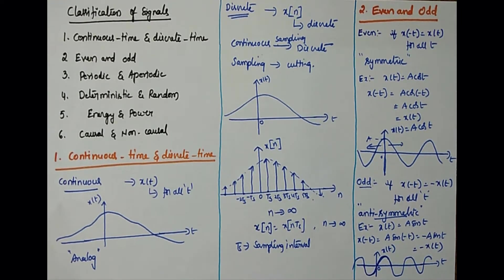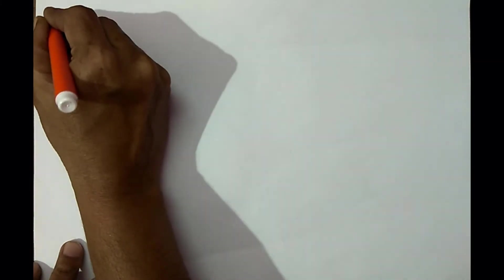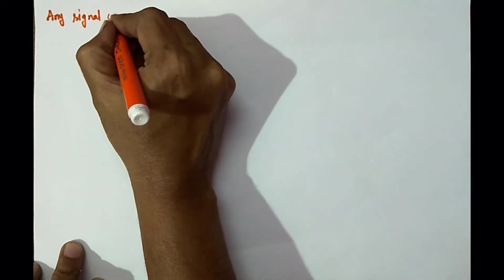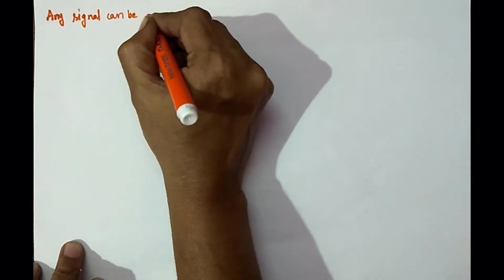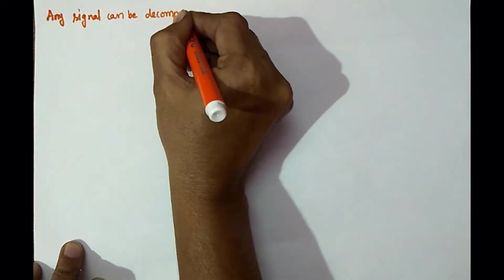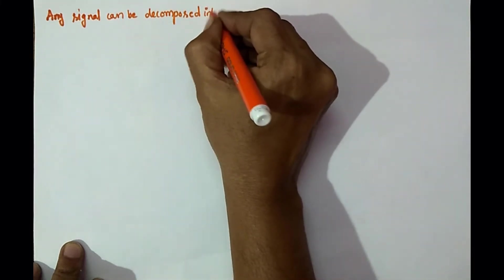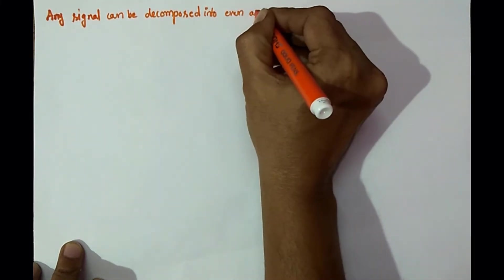To summarize: if x of minus t is equal to x of t, then that is called an even signal — the example is the cosine signal. And if x of minus t is equal to minus x of t, that is called an odd signal — the example is the sinusoidal. Any arbitrary signal can be decomposed into even and odd components.